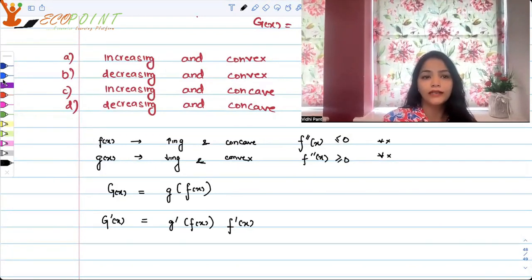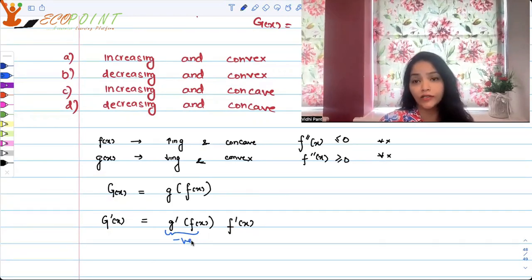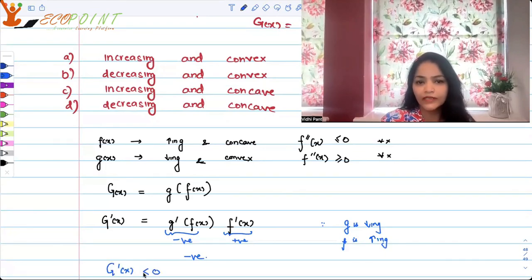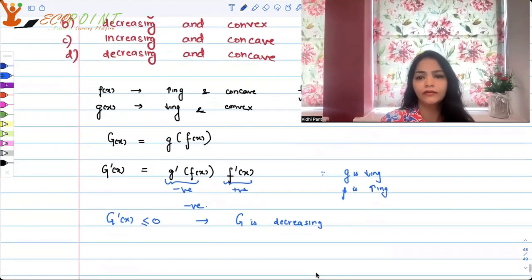Now I need to analyze what sign would this take. I know that g is a decreasing function, so g'(anything) will be negative. And I know that f is increasing, so f'(x) will be positive. This is basic logic: if you multiply a negative number with a positive number, you get a negative number. So G'(x) ≤ 0, and with that we can say that G is definitely decreasing.